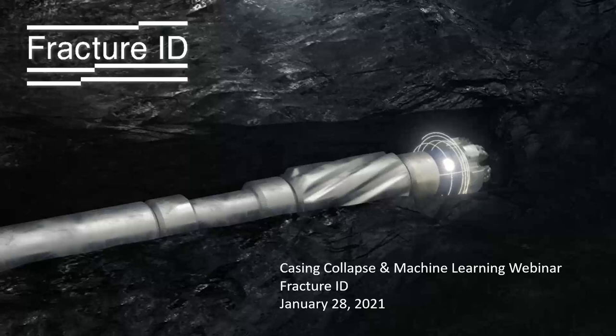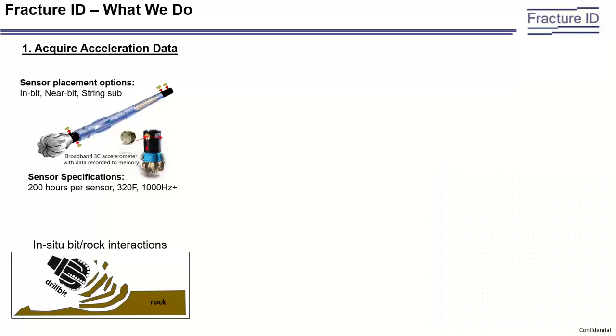I'd like to introduce Eric Romberg. Eric, please go ahead and introduce yourself. Thank you, Islam. I'm Eric Romberg, the completion manager here at Fracture-ID. I'm going to walk through a case study we published at ATCE last year about using machine learning models to predict casing deformation and casing collapse. Before that, I'll go through Fracture-ID's technology so you can understand some of the inputs going into these models.